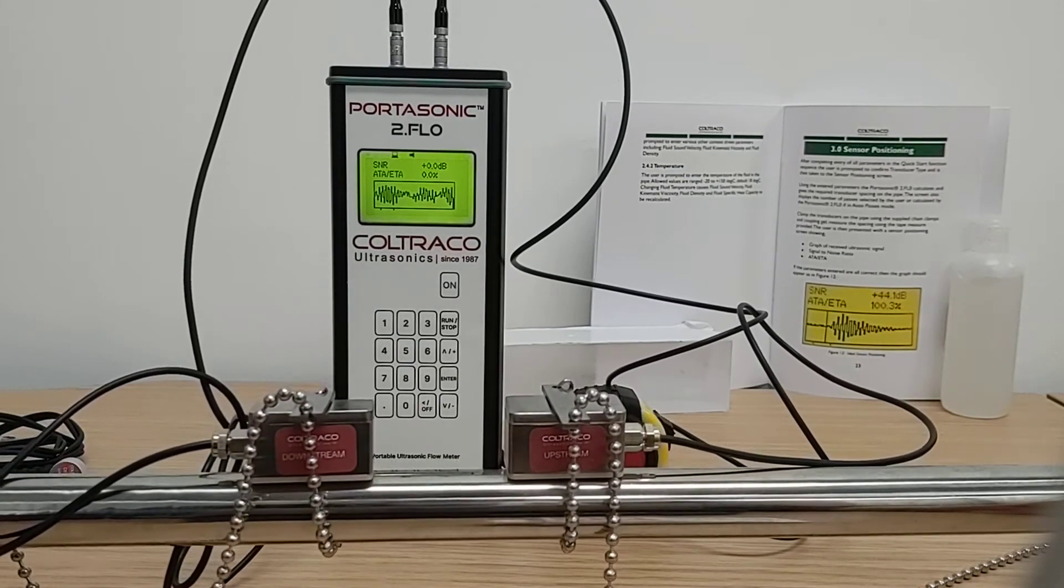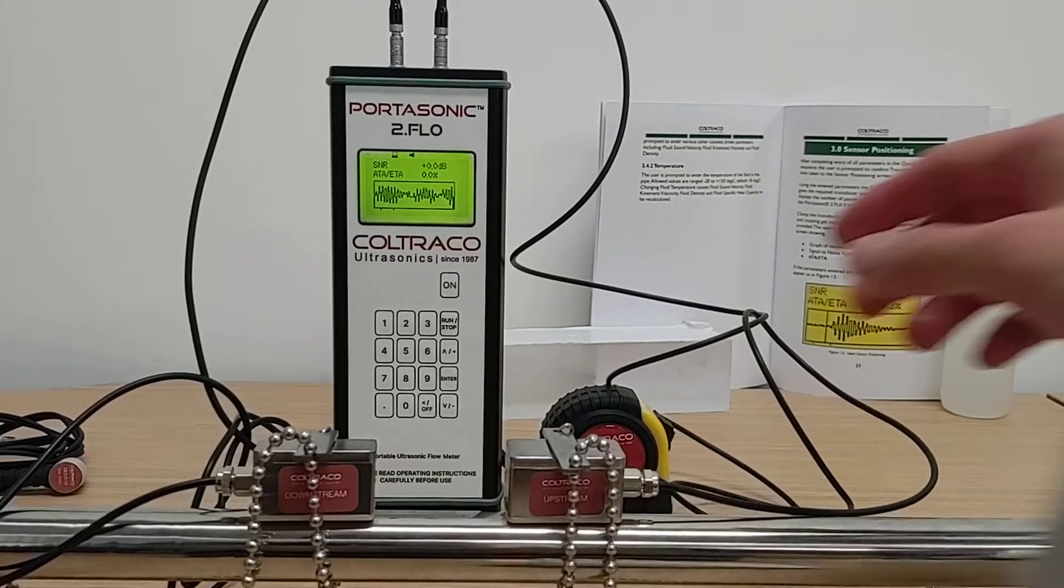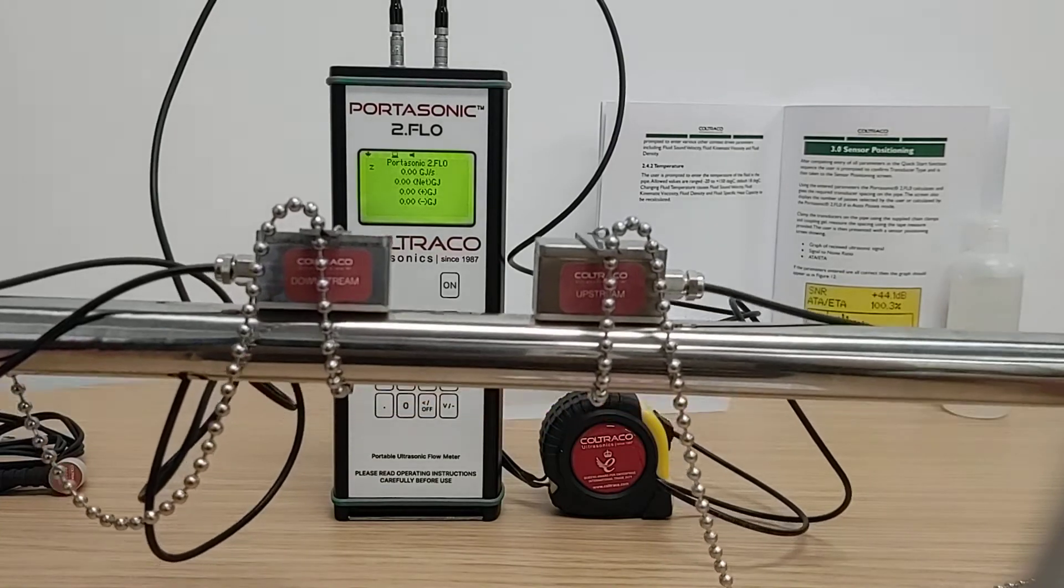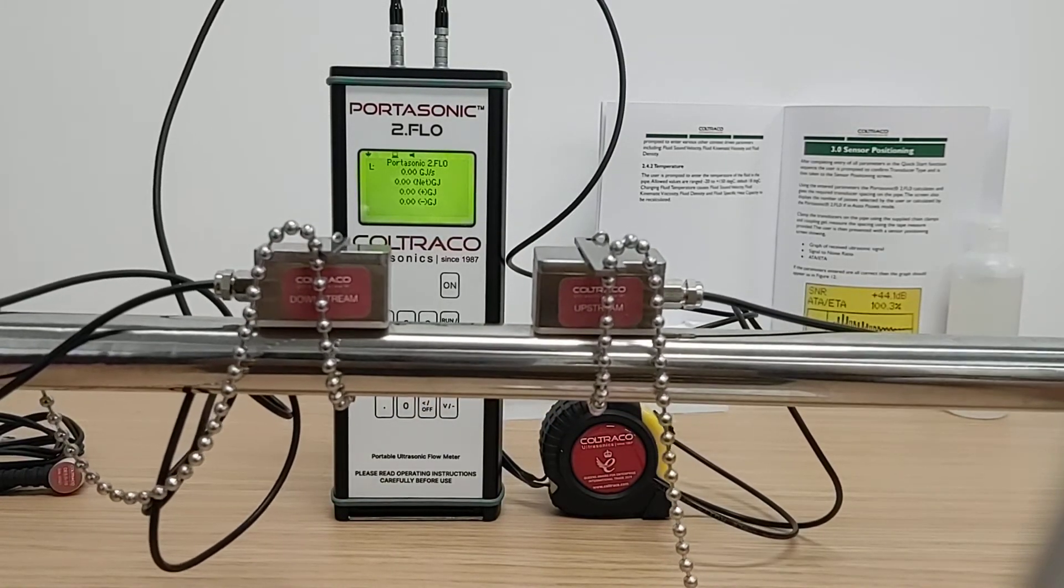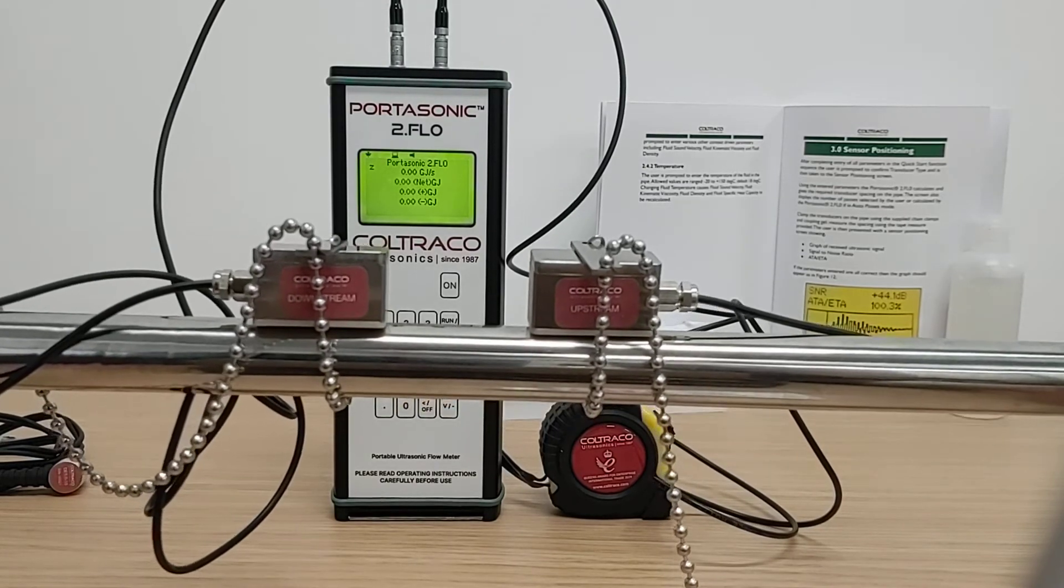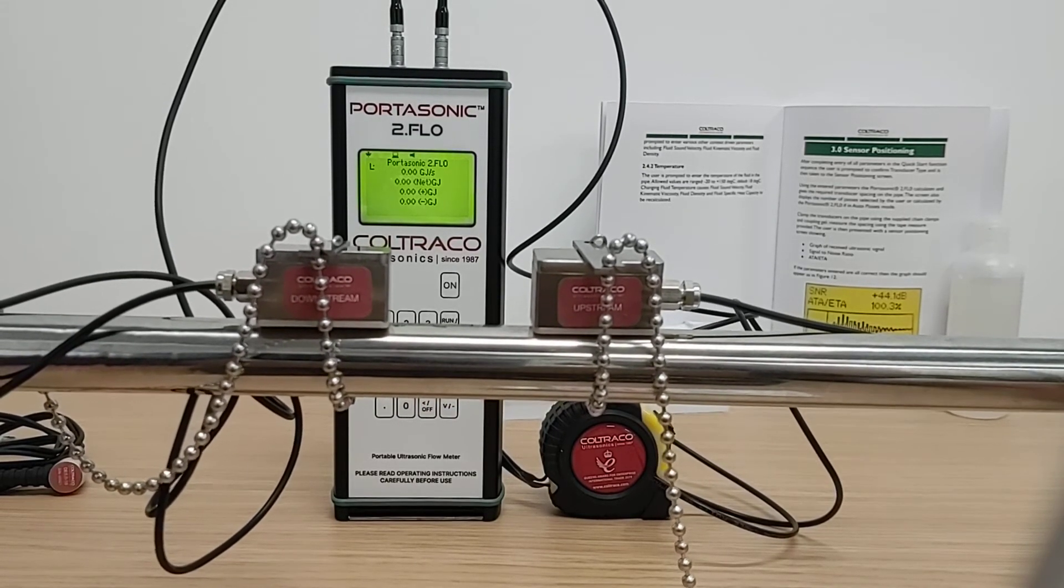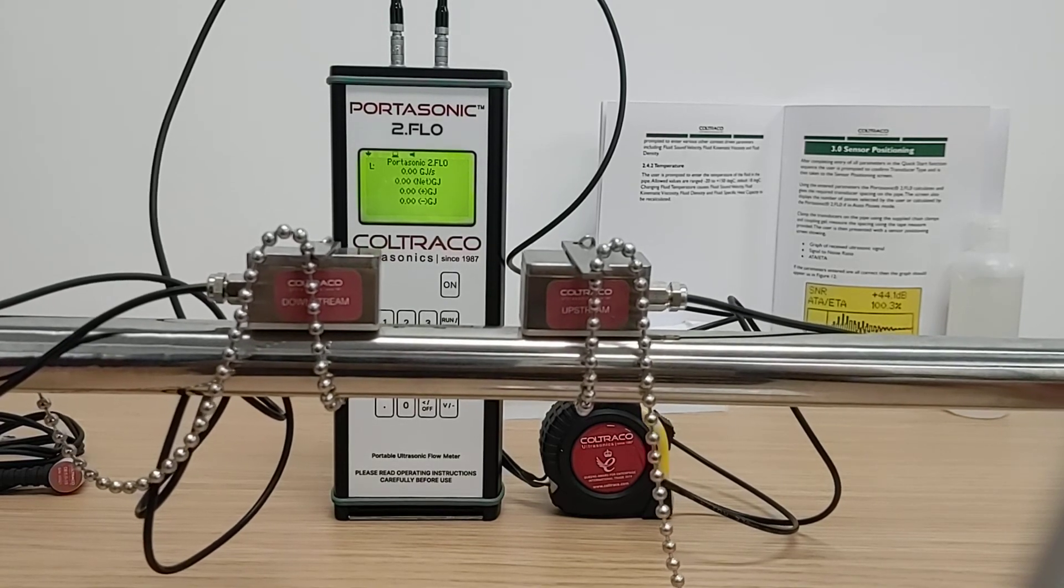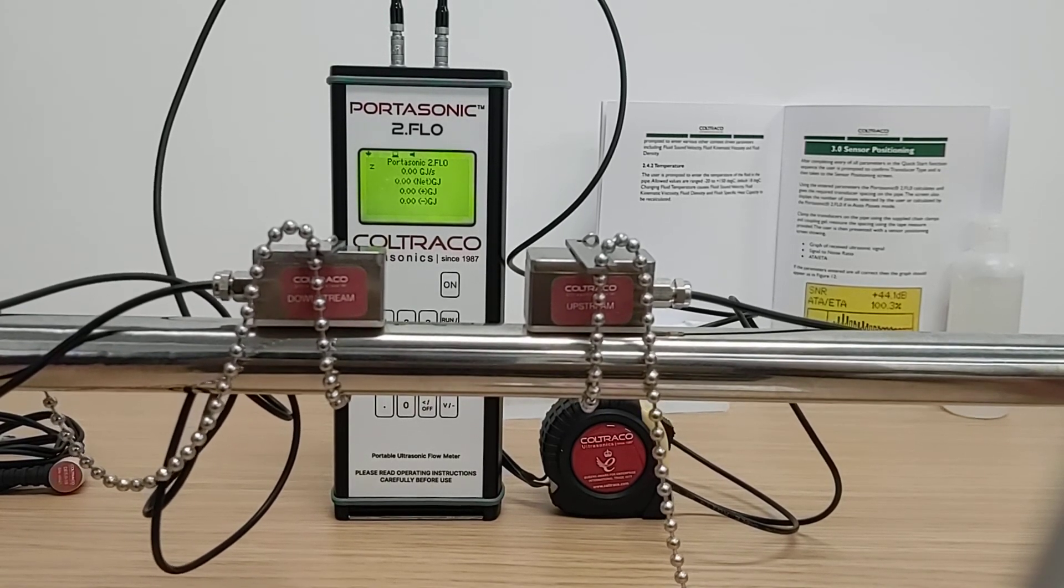And once you have achieved that, you can proceed to the next screen where you will take the flow rate measurement of your pipe. Now this is only a demonstration from me and there is no fluid in the pipe, therefore the readings are zero. But when you've installed this on your pipe with the fluid flowing, then you will see the measurement. Thank you very much.